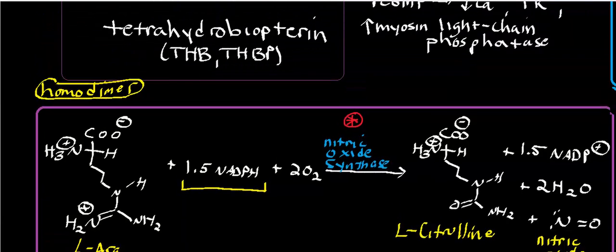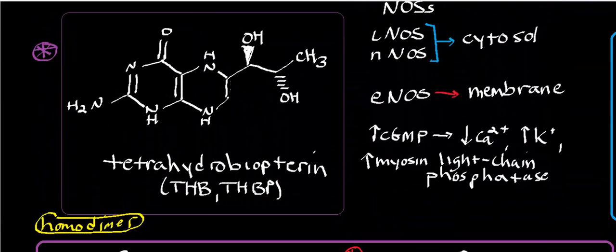There are two cytosolic nitric oxide synthases that exist in the intracellular fluid. Inducible nitric oxide synthase is the version used by white blood cells — cells of the immune system — to provide defense against pathogens. And then there's also neuronal nitric oxide synthase.